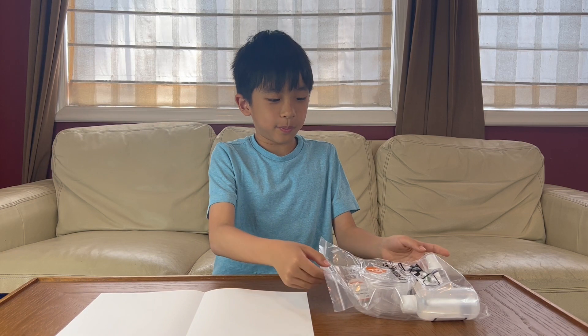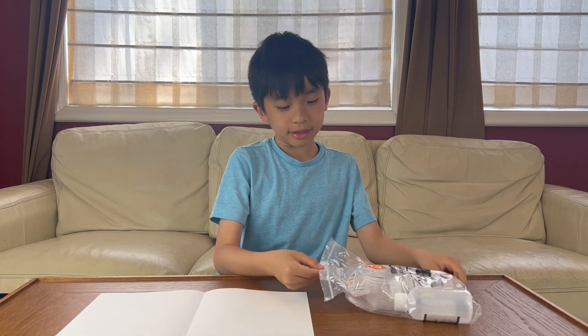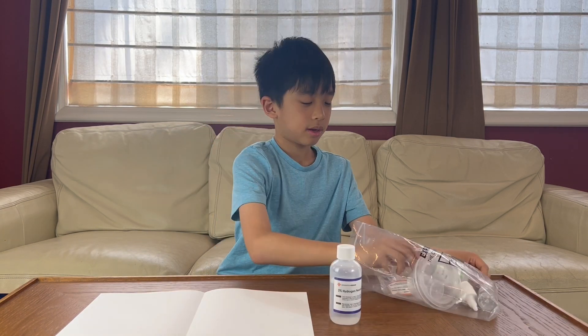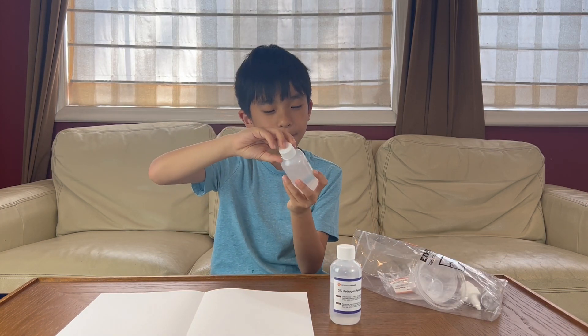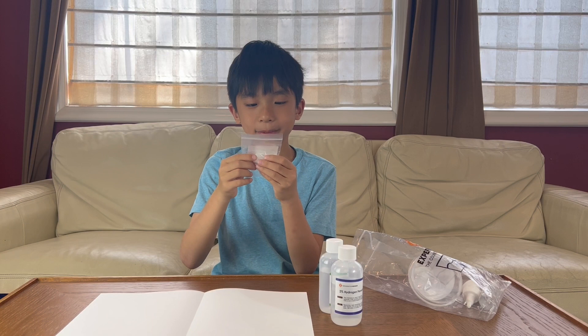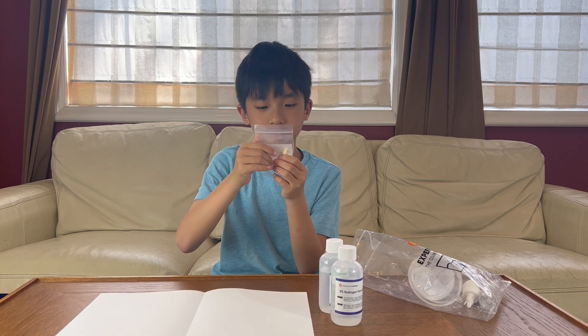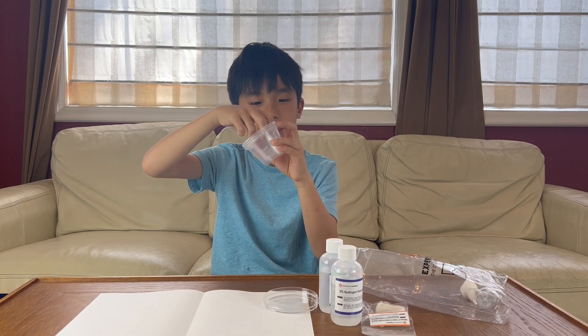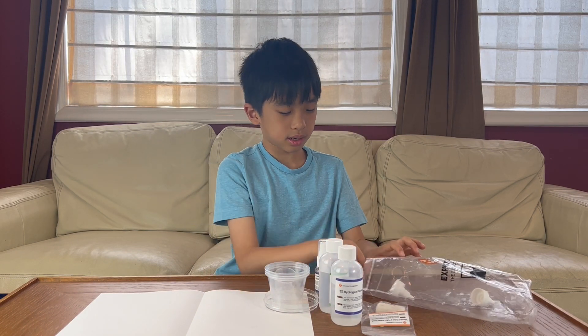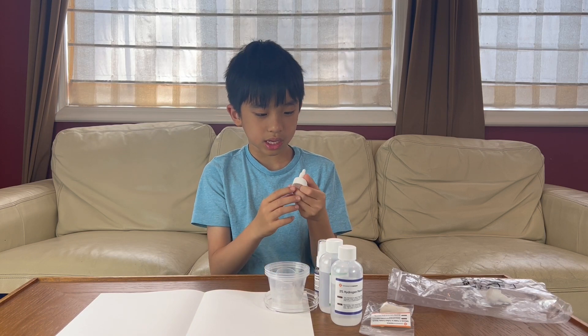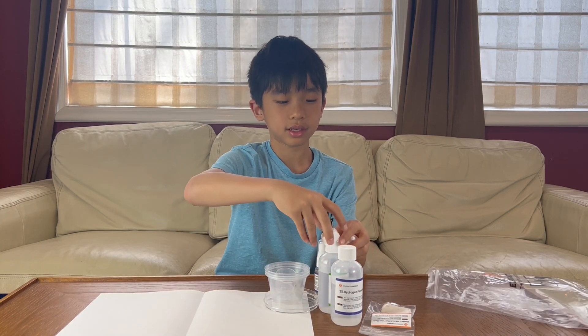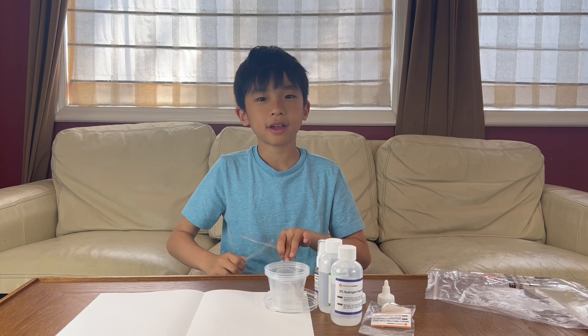That last experiment was very fun. But now for the final experiment, it's called the countdown reaction. Sounds very interesting. First, we have 2% hydrogen peroxide. More liquid. This one's 0.4% sodium iodide. And then here's a vitamin C tablet and potato starch. Three update trays. And then this measuring cup. A bottle cap. A second bottle cap. Let's get on to experiment number three.